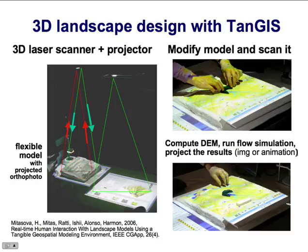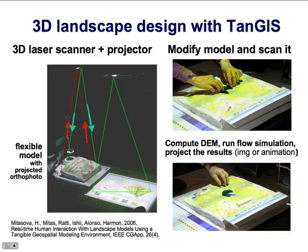For example, we can project a water flow simulation. Based on the results of the water flow simulation, we decide that we want to put a check dam in this area to reduce the flow that goes through this valley. The model is scanned and the simulation is rerun, and you can see that water accumulates behind this check dam.